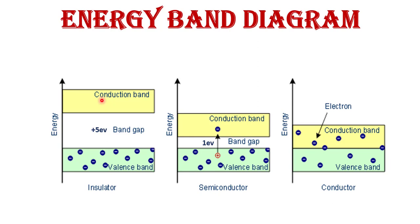In the filled band there are no free electrons. Next is the valence band. The outermost band of the atom is called the valence band, and the electrons of that band are called valence electrons. When valence electrons gain some energy, they leave the band and cross the energy gap — called the forbidden energy gap — and go to the conduction band, and current flow starts. The energy of the valence band electrons is more compared to the filled band. The conduction band is where electrons escape from their parent atoms, and such electrons are called free electrons.